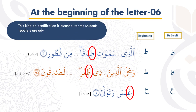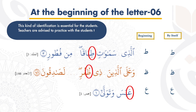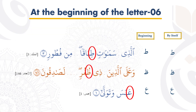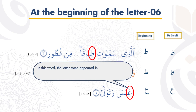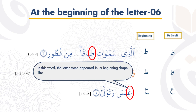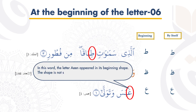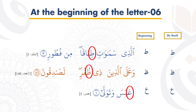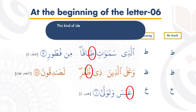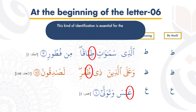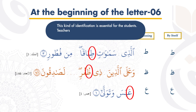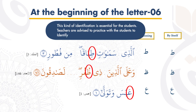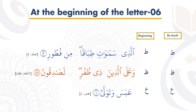Teachers are advised to practice with the students to identify the stated letter as per its shape. In this word, the letter Zua appeared in its beginning shape. The shape is not similar to its original standalone appearance. This kind of identification is essential for the students. Teachers are advised to practice with the students to identify the stated letter as per its shape.